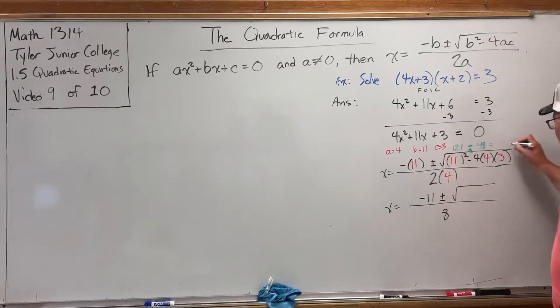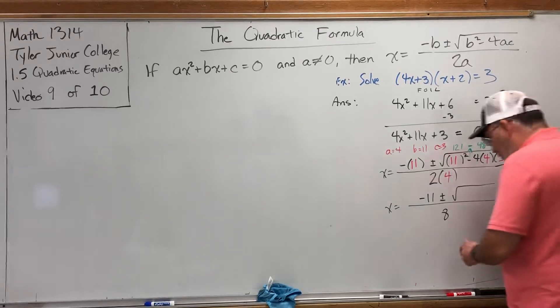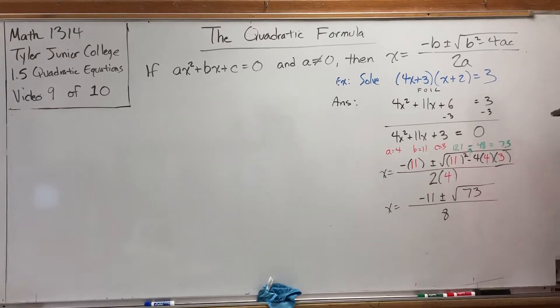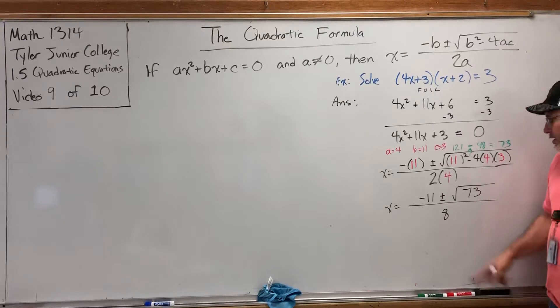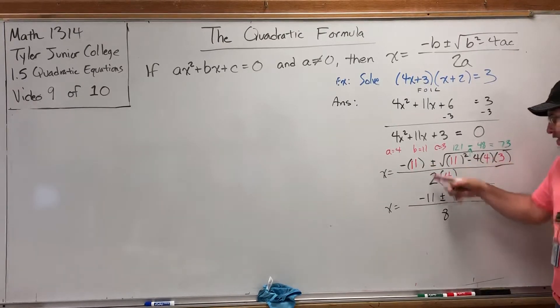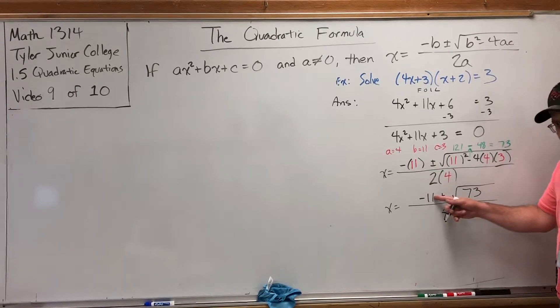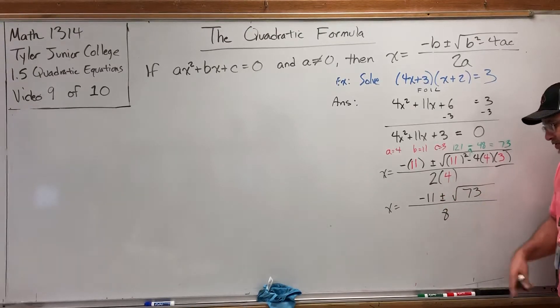121 minus 48. Let's see. 11 minus 8 is 3. You have to borrow 1. And 11 minus 4 is 7. Is that the correct difference? Yes. So under the square root, you get 73. Every quadratic formula problem will work the same way up until here. Get it ready. Pull out the numbers. Stick them into the quadratic formula. And then slowly chip away by working individual pieces until you get here. Something on the left of the plus minus. Something under the square root. Something in the denominator.